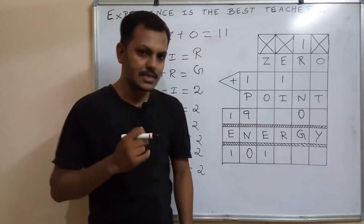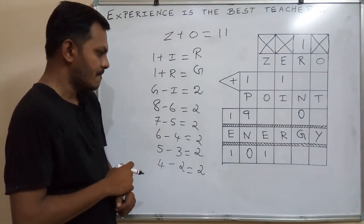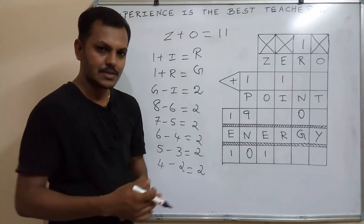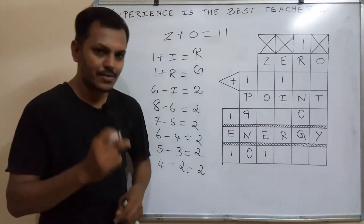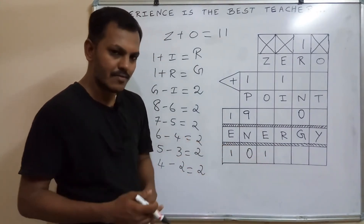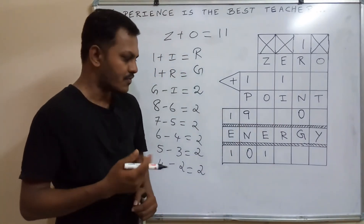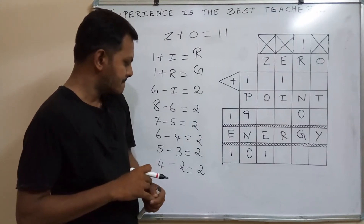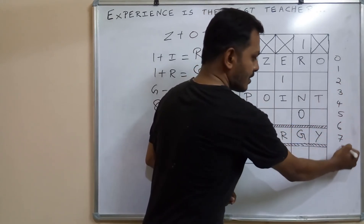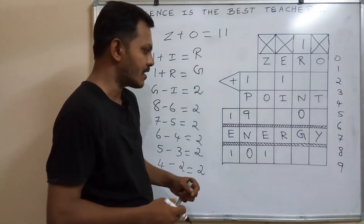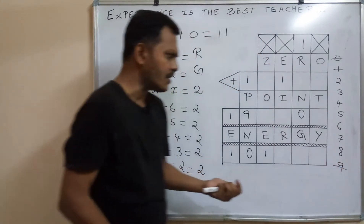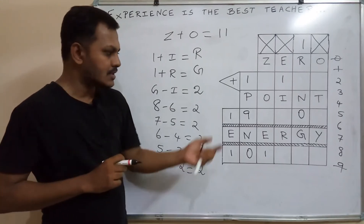Next, this column. We started with carryover — any number added with 0 will get the same number, so to get the carryover here it is a two-digit number. So 1 plus N, and we already allocated 0, so 1 plus R equals G. By comparing these two equations and substituting R equals 1 plus I in the equation, you will get G minus I equals 1 plus 1, which is 2. That means the difference between G and I is 2.